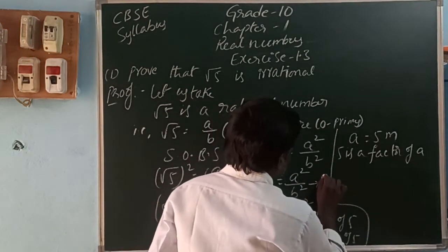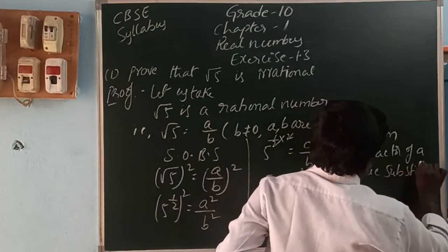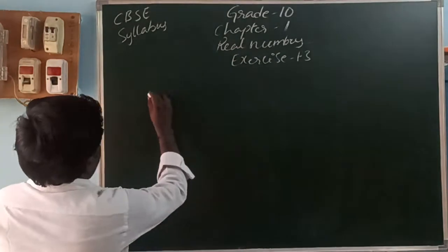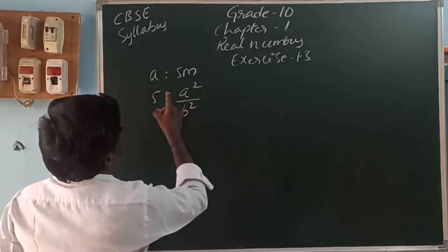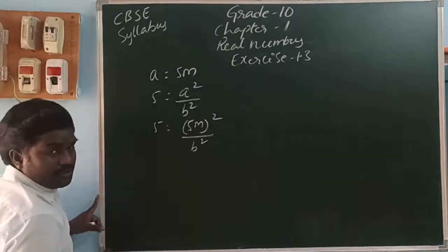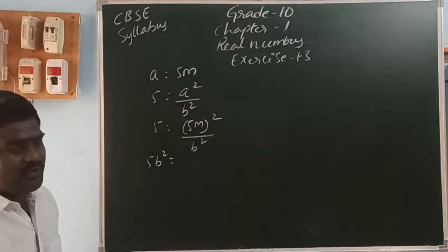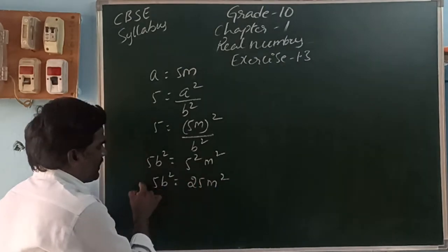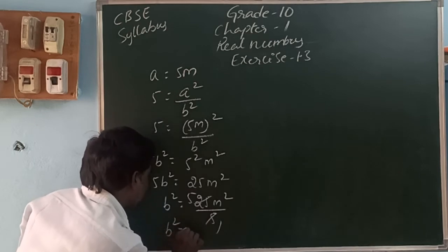We can substitute the value of a in equation 1. Since a is a multiple of 5, let a equal 5m. Substituting into equation 1: 5 equals (5m) squared by b squared. So b squared times 5 equals (5m) squared, which is 5 squared times m squared, giving 5b squared equals 25m squared. Therefore b squared equals 25m squared by 5, which simplifies to b squared equals 5m squared.